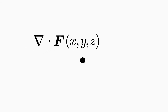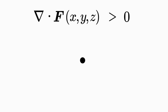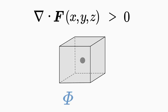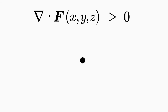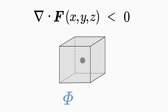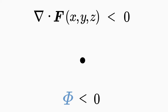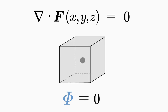If the divergence at location x, y, z is positive, then there is a source of the vector field F at this location. If this location is enclosed by a surface, then the flux through the surface is also positive — the vector field flows out of the surface. If the divergence is negative, then there is a sink of the vector field F, and the flux through the surface is also negative — the vector field flows into the surface. If the divergence is zero, that location is neither a sink nor a source: the vector field does not flow out or in, or it flows in as much as out, so the two amounts cancel each other out.